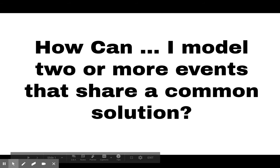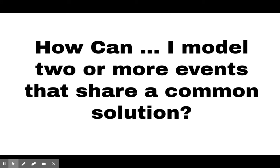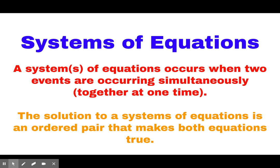Hello everybody and welcome to Solving Systems by Substitution Day 3, where today we're going to continue learning and applying our question: how can I model two or more events that share a common solution? We model two or more events that share a common solution through systems of equations, where two events are occurring simultaneously. The solution to a system is an ordered pair that makes both equations true.